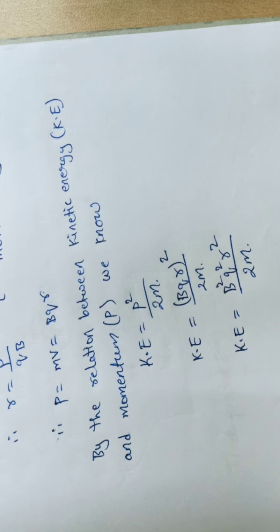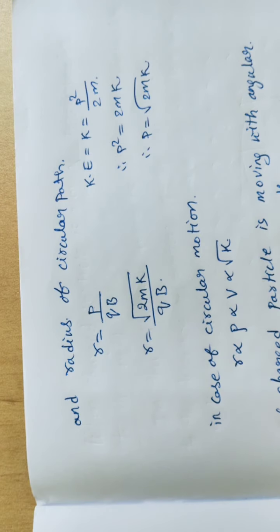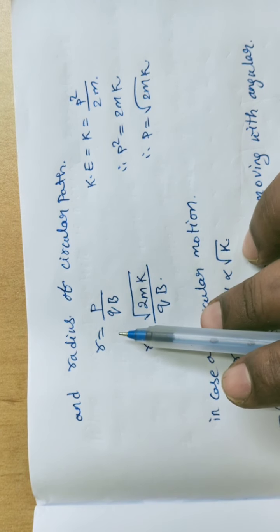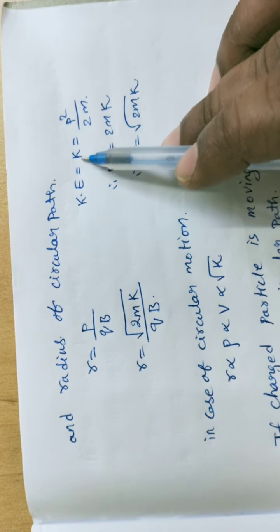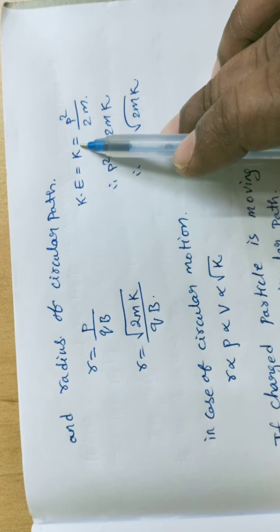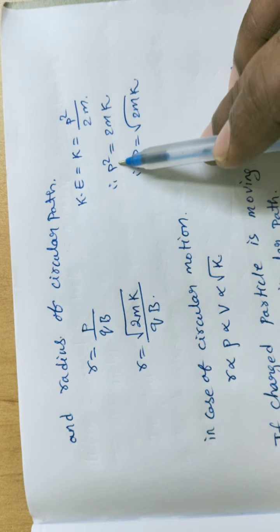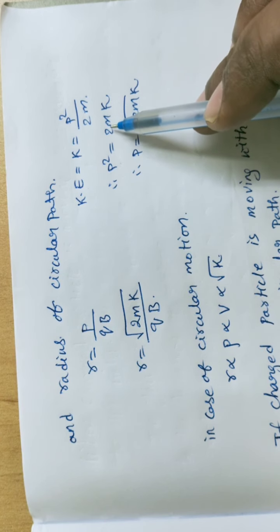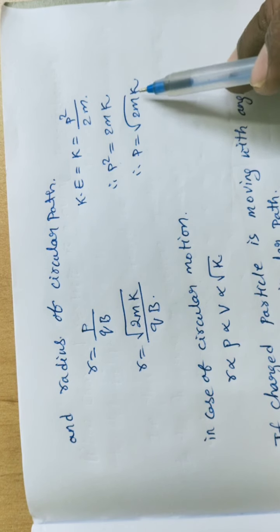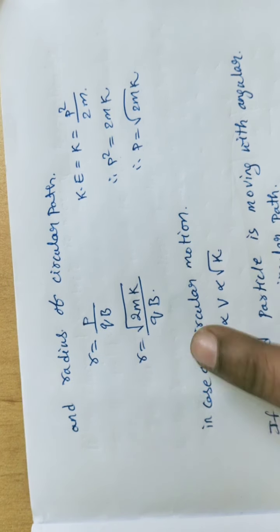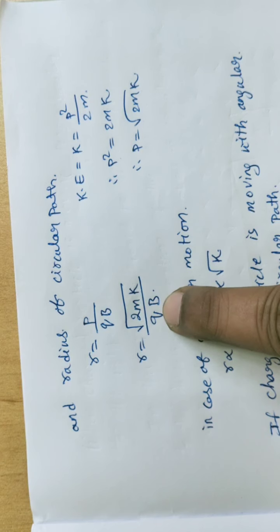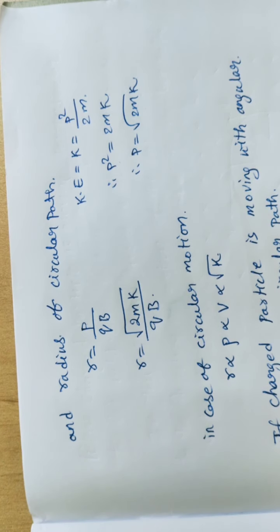Now we discuss the time period and frequency of the moving charged particle. The radius is R = P/QB and KE = P²/2M. When the charged particle moves in a circular path with angular velocity omega, recall the centripetal force F = MV²/R and the relation between linear and angular velocity: V = Rω. Substituting, F = MRω². Equating with F_max = QVB = MVω, and cancelling V, we get QB = Mω, so ω = QB/M.